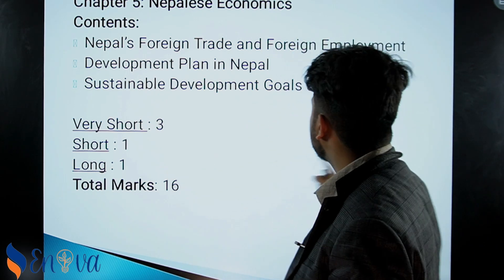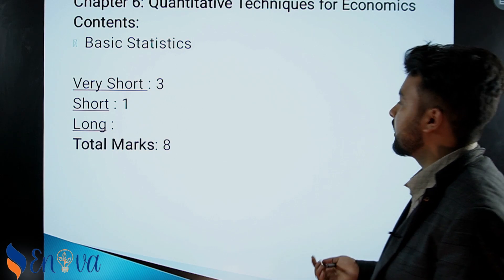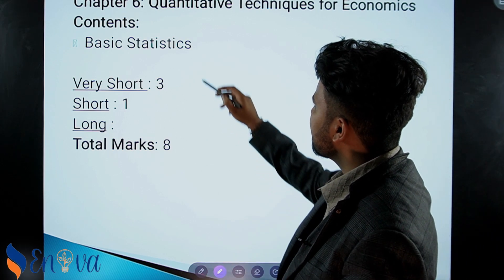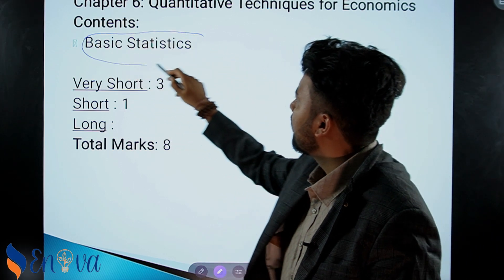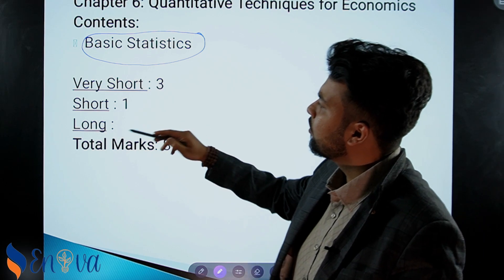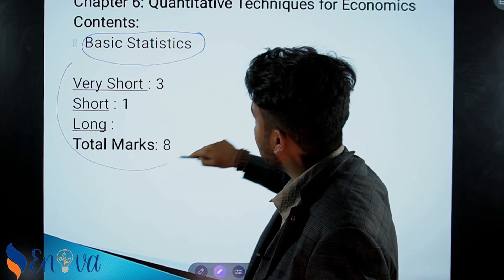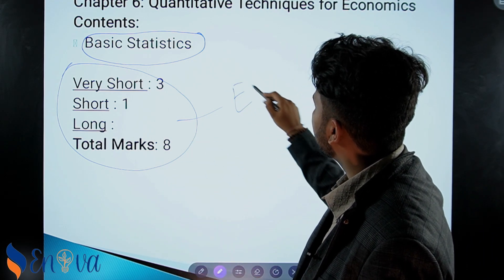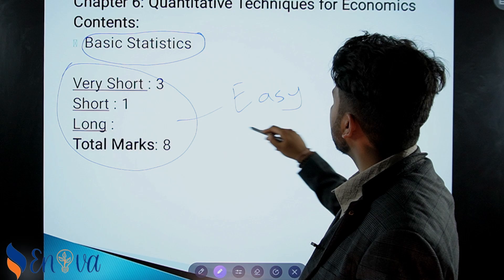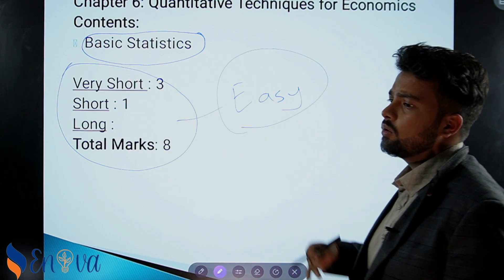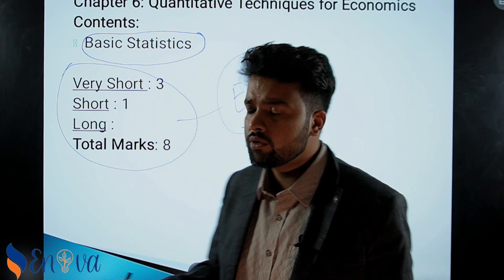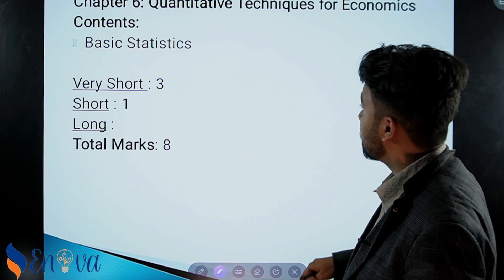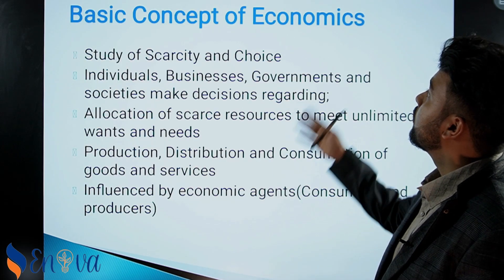The last section is quantitative techniques. I don't know why students feel pressure about this section — it has just basic statistics, so just relax and don't worry. It will be very very easy. In all the classes, we'll cover numericals as well, and theory and PDF notes will be provided. Don't miss the class — we'll help you get A+.